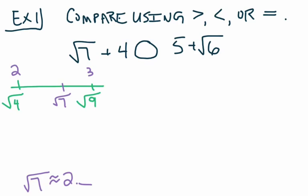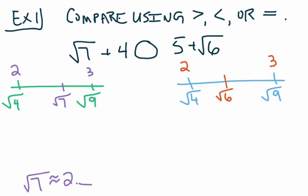I'm going to do the same thing with the square root of 6. The square root of 6 is in between the square root of 4 and the square root of 9, and I would put it a little bit closer to the square root of 4. I know the square root of 4 is 2 and the square root of 9 is 3, so the square root of 6 is going to be 2 point something as well.